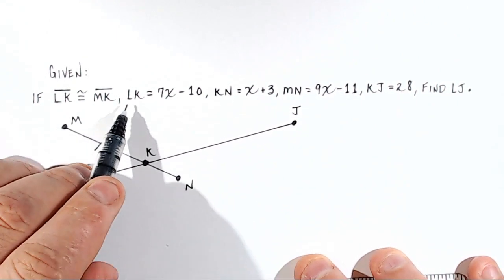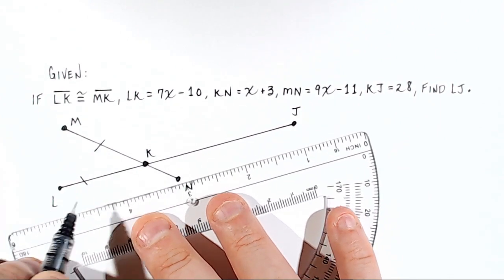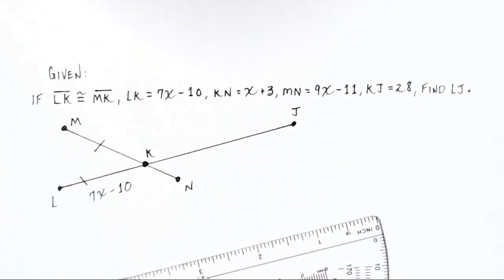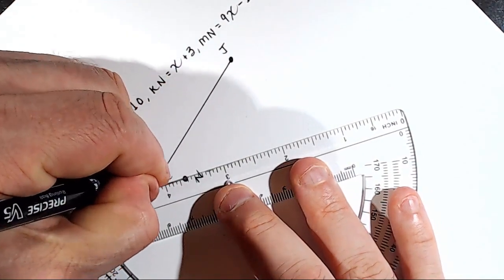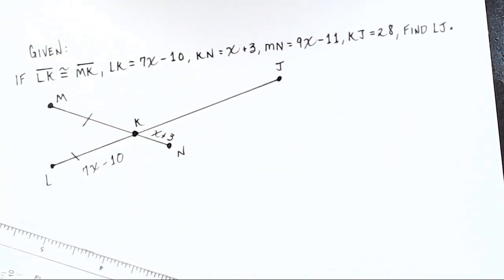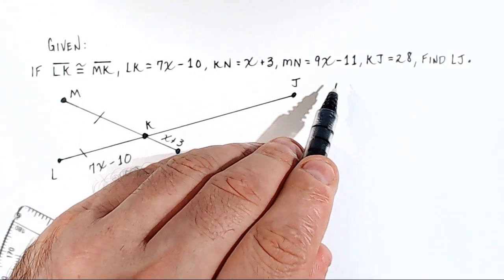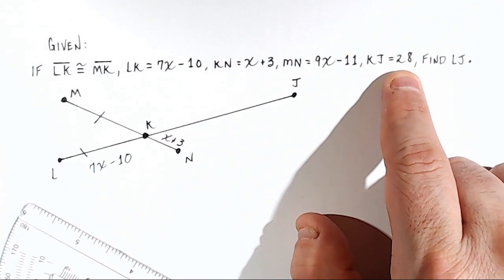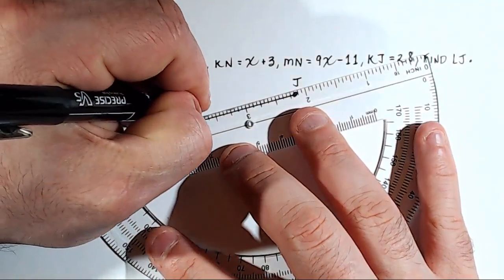Let's start labeling. LK is congruent to MK, and LK equals 7x minus 10, so the distance from L to K is 7x minus 10. The distance from K to N is x plus 3 — let's label that. The whole distance from M to N is 9x minus 11. And KJ equals 28, so the distance from K to J is 28.